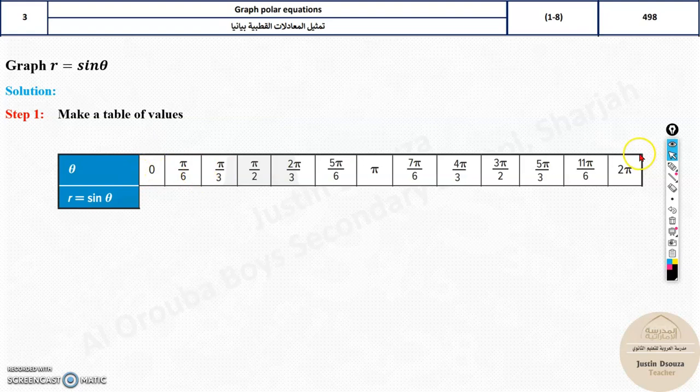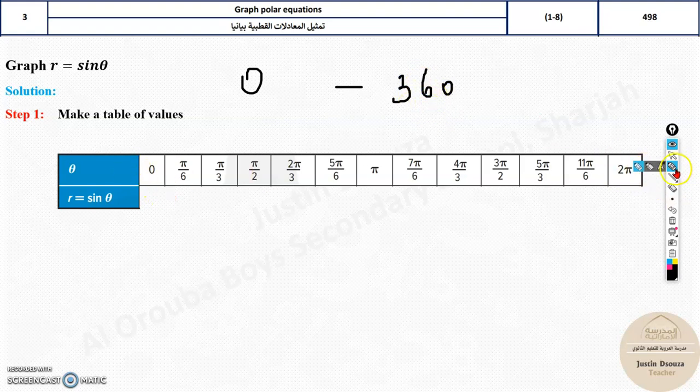You need to assume these theta values. Generally, we assume 0 to 360, that is the same over here, 0 to 2π, that is 360 degrees. π means 180. We give a spacing of generally 30 degrees. So 0, 30, 60, 90. You can see π/6 is 30, π/3 is 60, then we have 90, that is π/2, and so on. It keeps on added by 30.